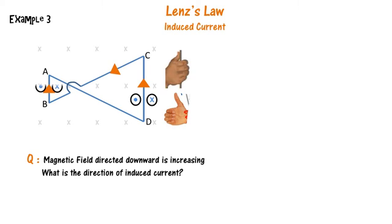We also establish the direction in the smaller loop. The magnetic field within the smaller loop points in the same direction as the external field, supporting the change in flux, which is not consistent with Lenz's law. However, the CD loop has a larger area compared to the AB loop, so the direction is established based on the field created in the CD loop. Therefore the direction of the current is from D to C.